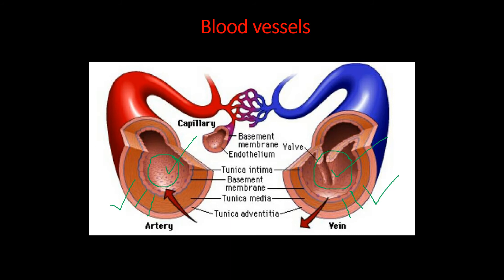The blood flowing through the artery has high pressure, while the vein has low pressure. Veins carry valves — a V-shaped structure — whereas arteries are devoid of valves. These valves also control the speed of blood flow through the blood vessels. That is why inside the vein blood flows at a low speed, whereas in the artery it flows at a high speed.